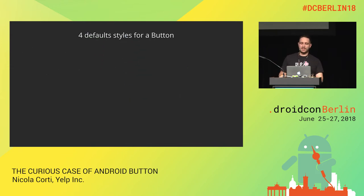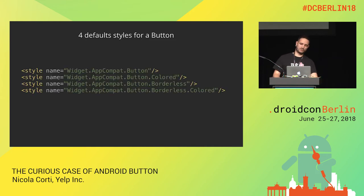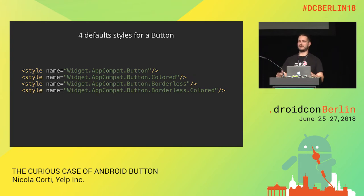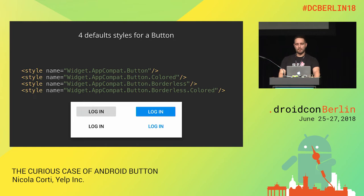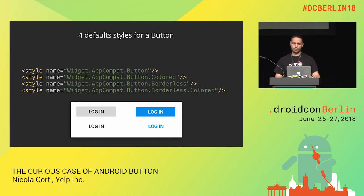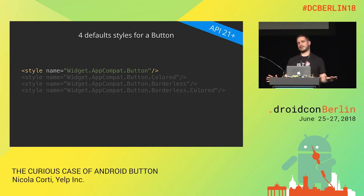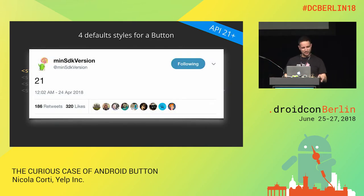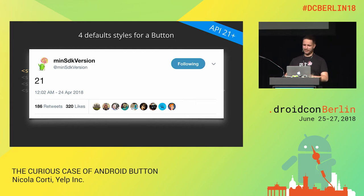The support library gives us four default styles for buttons: AppCompat.Button, AppCompat.Button.Colored, AppCompat.Button.Borderless, and AppCompat.Button.Borderless.Colored. In the new Material Components Library they're adding new styles, but they're still in alpha, so I won't talk about those as they might change. Those are how those styles look. If you want to customize your buttons, have a look at what's inside those styles to understand how things are set up and create your own. Since we want to work on the shape level, let's focus on the first one. For simplicity, I'll focus on API 21+.